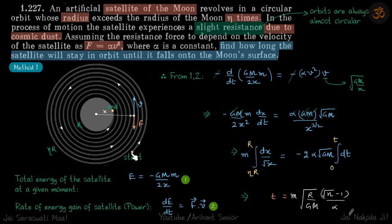If the radius of the initial orbit is given, we need to find how long the satellite will stay in orbit until it falls on the moon's surface. The resistive force is given as a slight resistance, which means the orbits are always almost circular.